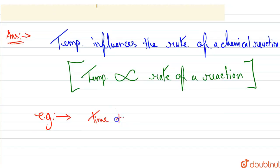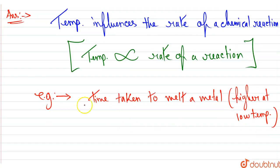If we take a metal, the time taken to melt a metal will be much higher at lower temperature, and the time will be lower at higher temperature.